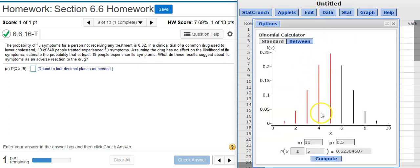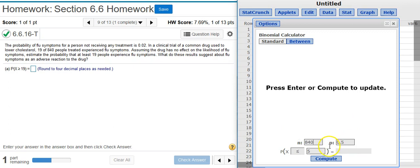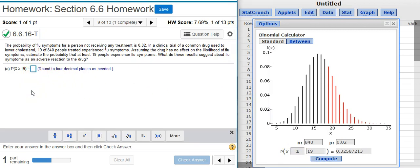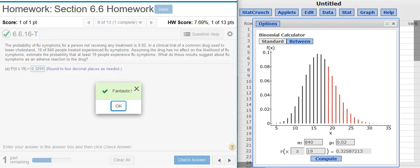Here in my binomial calculator, I need to insert the sample size. That's N. So my sample size here is the total number of people in the sample, which is 840. P is the probability of success, which we saw earlier in our problem statement, is 2%. And then I want the probability that X is going to be greater than or equal to 19. And there's my probability. I'm asked to round to four decimal places. Fantastic!